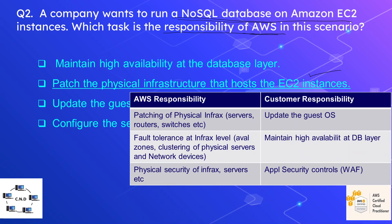In the IaaS (Infrastructure as a Service) model, the cloud provider AWS is responsible for patching physical infrastructure such as servers, routers, and switches, including the hypervisor (also called the host OS). The customer is responsible for updating the guest OS. Fault tolerance at the physical level — such as availability zone clustering of physical servers and network devices — is also AWS's responsibility, while maintaining high availability at the database layer is the customer's responsibility.